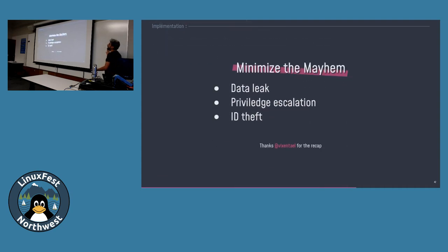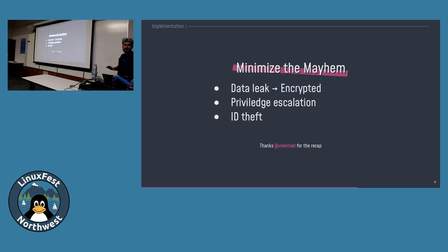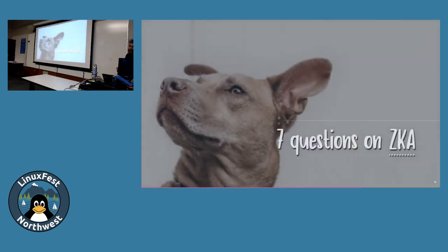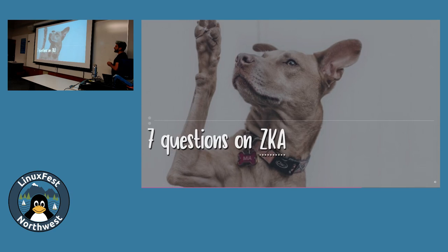The main goal of zero knowledge architecture is just to minimize the risks. In case of a data leak, it's encrypted - you're safe. In case of privilege escalation, it's encrypted - it's okay. In case of identity attacks, there is zero knowledge proof which relies on encryption - you're okay. In all situations, the only goal is to limit the ways to attack your application and get access to your users' data.